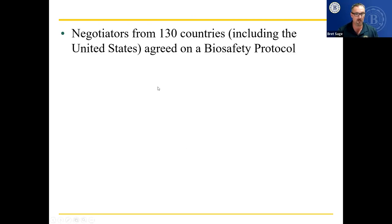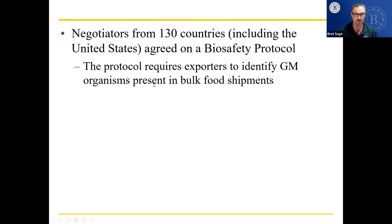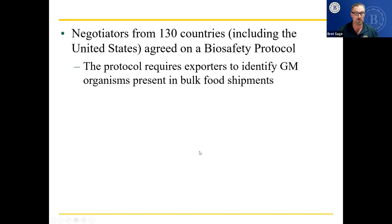Negotiated by 130 countries including the United States, the Biosafety Protocol requires exporters to identify genetically modified organisms present in bulk food shipments. If you're sending food from the United States to another country, you have to label whether it's genetically modified — and a lot of countries don't want it. For example, an African country was offered genetically modified corn, but it was selling much of its corn to Europe, which does not want genetically modified organisms. That African country asked the United States to grind it up first so farmers wouldn't plant it and ruin their GMO-free status, but the United States refused, so the African country rejected it.